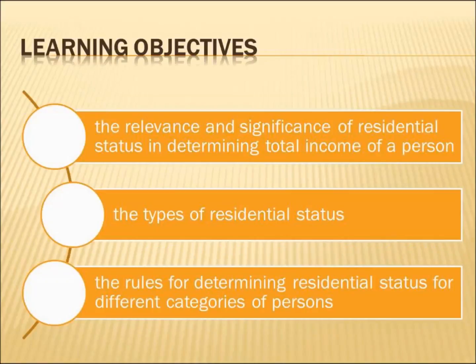We are done with almost all the learning objectives of this unit — numbers 1, 2, and 3 — and now we just need to revise by taking a few more examples, and further cover the residential status of assessees other than individuals, that is HUFs, AOPs, BOIs, and companies. Today is largely a revision of what we have done in previous classes.